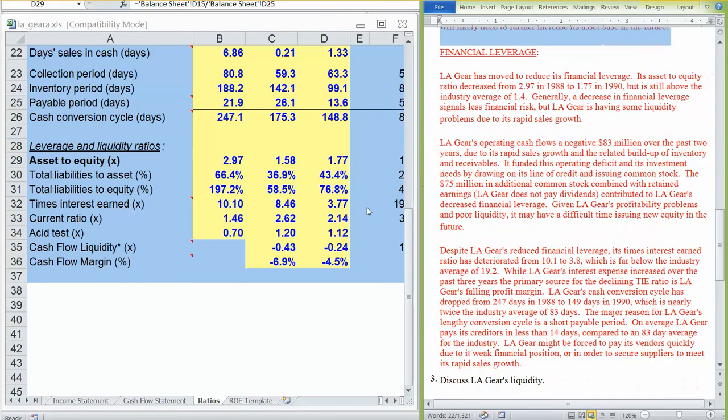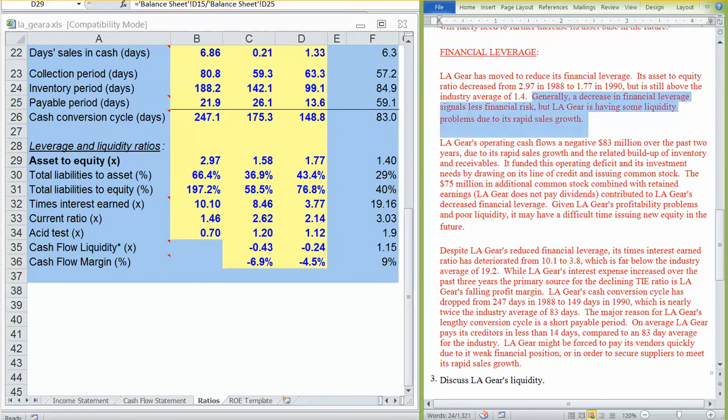We still have more risk than the industry average. And while generally a decrease in financial leverage indicates less financial risk, it certainly does from a solvency perspective. LA Gear is certainly going to experience some financial risk from a liquidity perspective. Remember, we just found in the last section when we looked at turnover ratios, it has very little in the way of cash on hand.